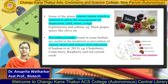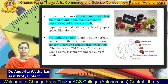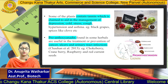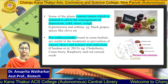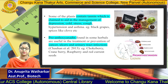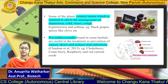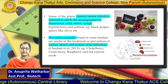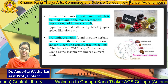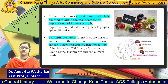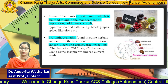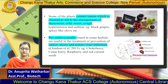Some plants contain tannins which are claimed to aid in the management of depression, cold, and asthma. For example, black grapes and spices like clove have tannin content which helps reduce cold and stress conditions.